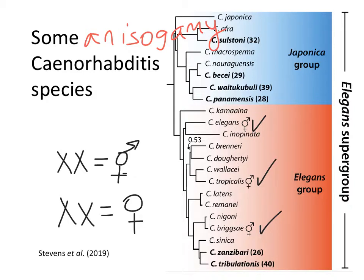Biologists define whoever makes the small and, more importantly, motile gamete as male, and whoever makes the large, immotile gamete — that is, doesn't move around as much — as female. That's how biologists at the most fundamental level define two sexes. You can apply that to plants and animals — any sexually reproducing species. For example, it's pollen that gets released into the air or carried by pollinators; that's the sperm of the plant — the mobile gamete. The ovum stays in one spot and the pollen comes to it.